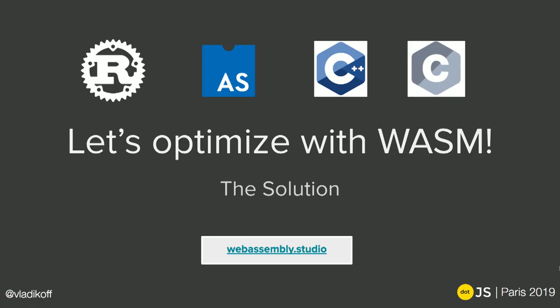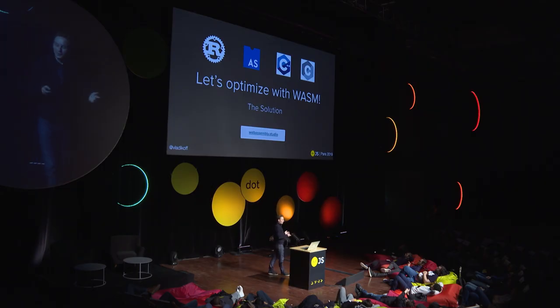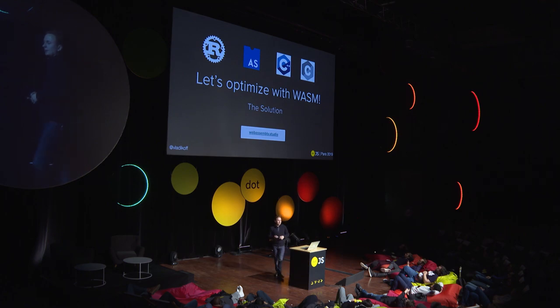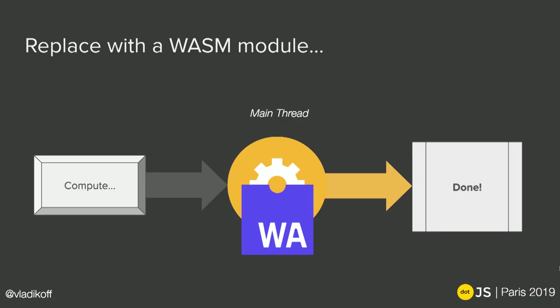So we need to decide: what can we use to write this WebAssembly module in? My order of preference is: first I go to Rust if it can do it; if not, I'll explore AssemblyScript to see if that can do it; and maybe C++ or C is the other solution. You can visit WebAssembly.studio today, and it will give you a popup showing how these WASM modules look when you use these different technologies.